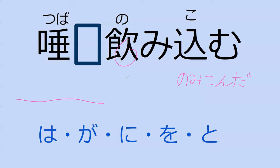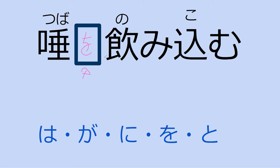If I want to say 'I swallowed spit' or 'to swallow spit,' what particles do you think I should use? Tsuba ga nomi-komu — so theoretically if it was fully unconscious you would use ga, but we actually use wo, because the idea is that you're forcing yourself to swallow spit — you're specifically gulping it.